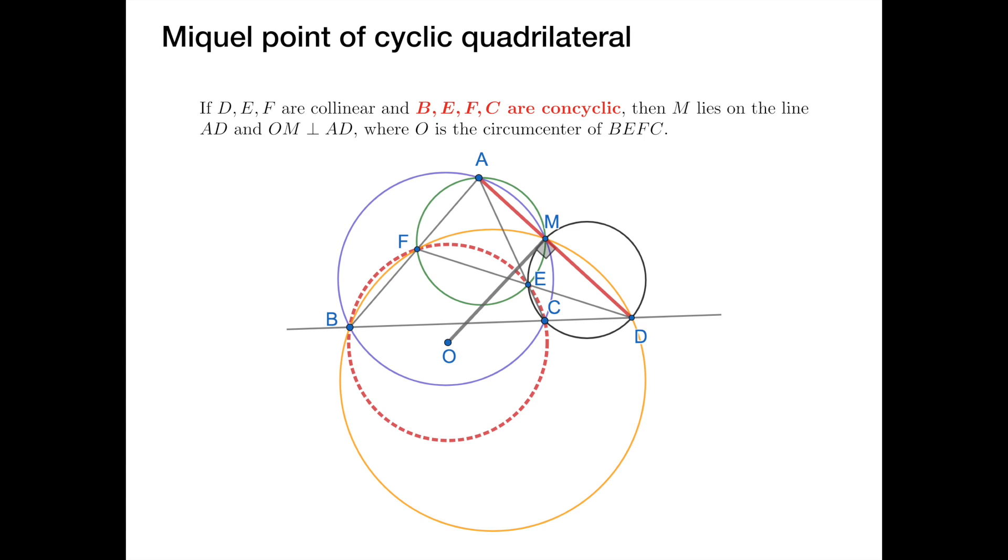So to summarize, the Miquel point of a cyclic quadrilateral can be viewed as a special case of the Miquel point defined by a triangle. Sure, it is less general, but this additional condition provides us a better characterization about the point M. So I will show you some examples how to use these theorems in the next lesson. And now let's go back to our exercise.